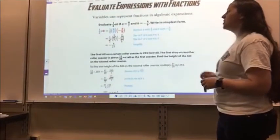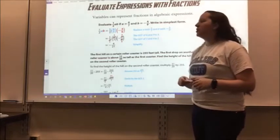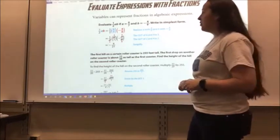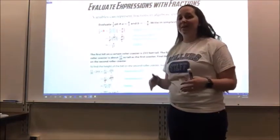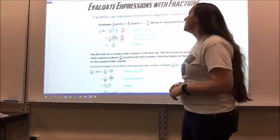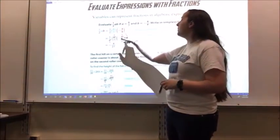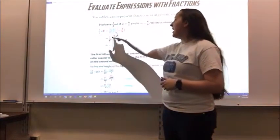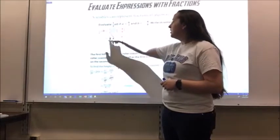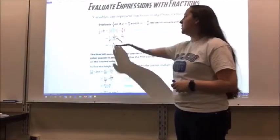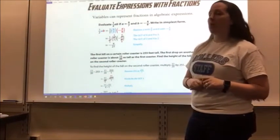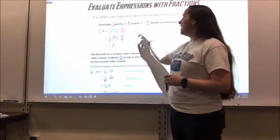Evaluating expressions with fractions: variables can represent fractions in algebraic expressions. Evaluate (1/2)AB if A equals 6/7 and B equals negative 4/9, and write in simplest form. Remember there is an invisible multiplication — I'm saying 1/2 times A times B. So: 1/2 times 6/7 times negative 4/9. I can cross-simplify: 2 goes into 4 giving 1 and 2; 6 and 9 simplify to 2 and 3. I multiply 1 times 2 times 2 to get 4, and 1 times 7 times 3 to get 21, with one negative sign, so the answer is negative 4/21.